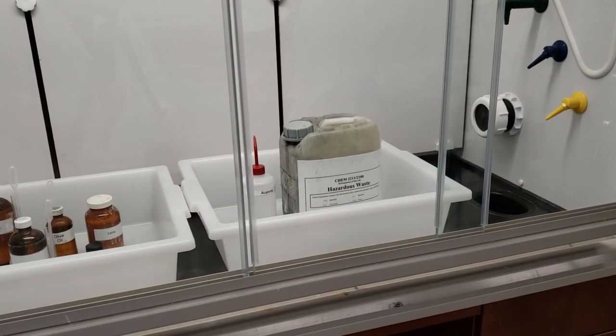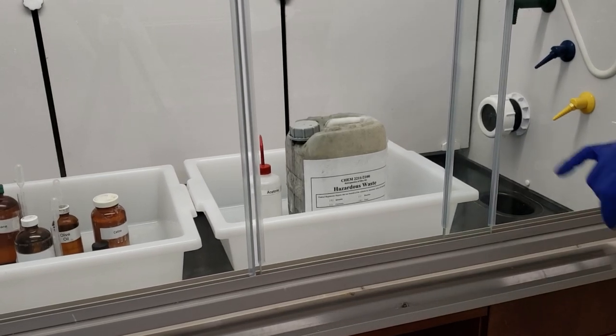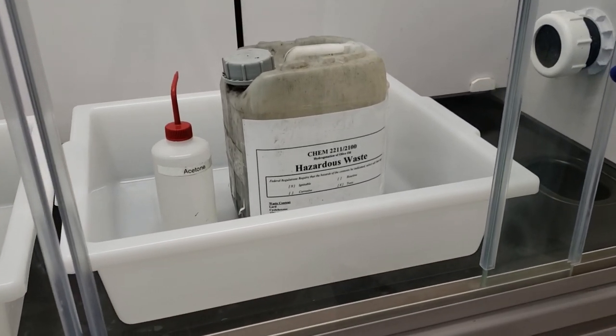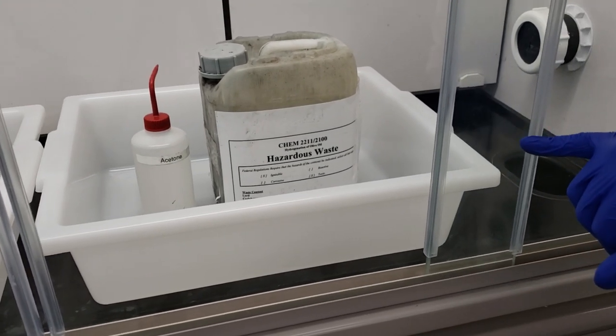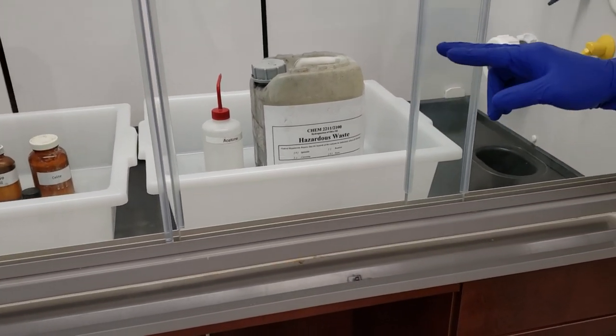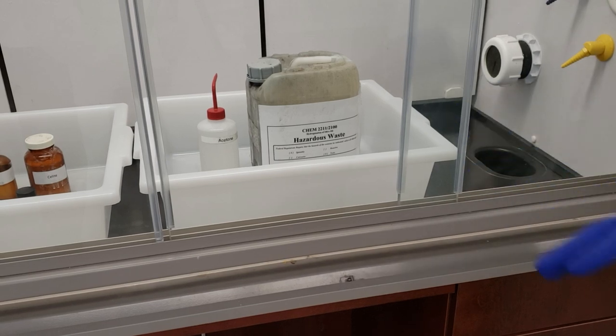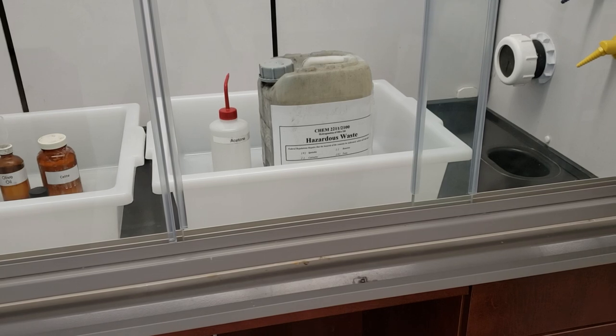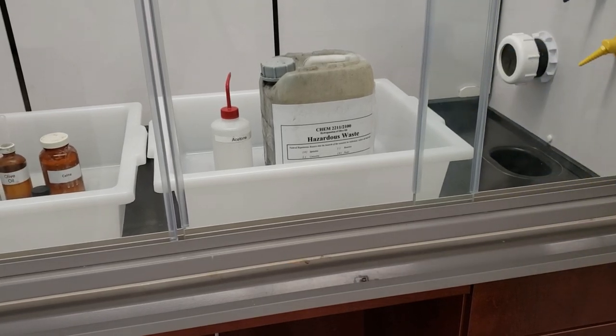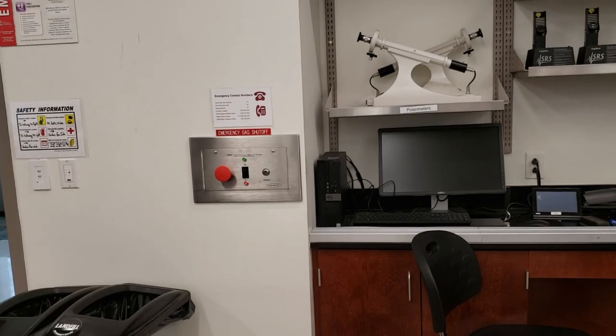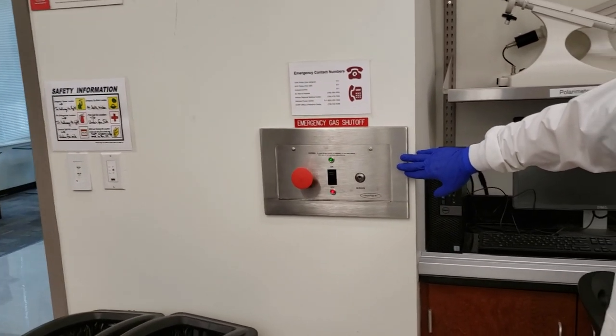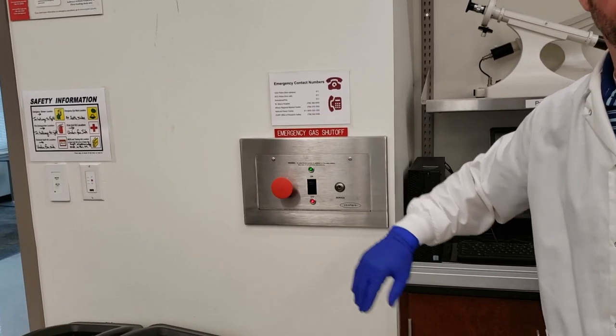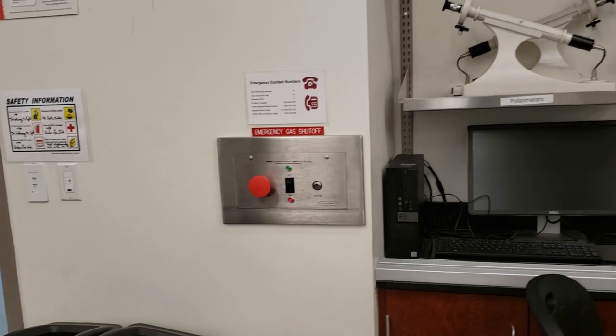For disposing of hazardous waste from experiments, we have specific labeled containers placed in each fume hood. For example, this is our hydrogenation of olive oil waste for 2211 and 2100. Any waste generated goes only into this bottle, including any acetone or water rinsings from cleaning glassware. Never rinse that down the sink. Last, we have our emergency gas shutoff at the front of the room, labeled obviously with a big red button. If we have a problem with the gas system, hit that to cut it immediately so everyone will be safe.